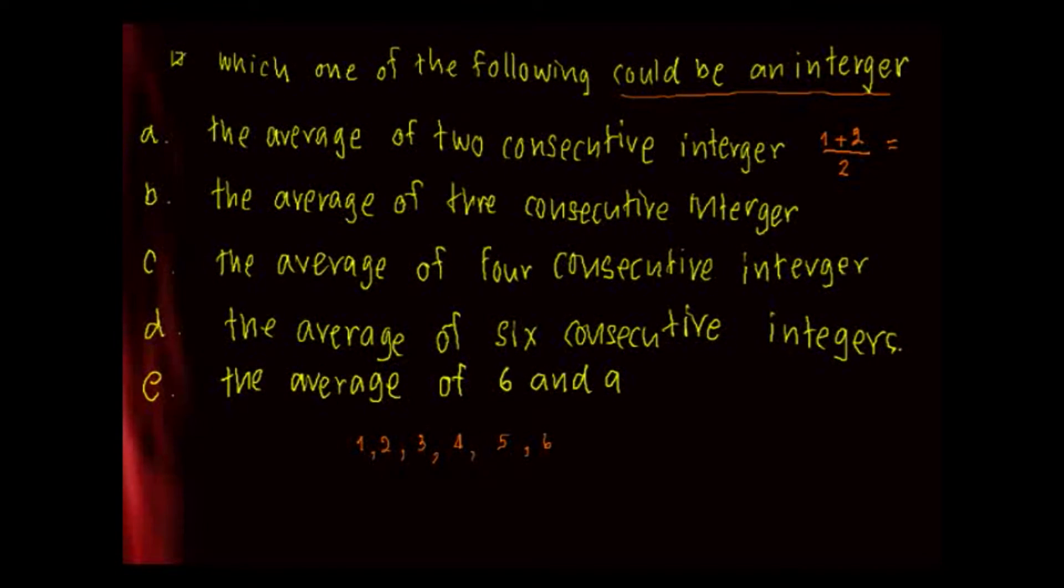That's going to be 3 over 2. Now, for three consecutive integers, 1 plus 2 plus 3 divided by 3, so 6 divided by 3 is equal to 2.